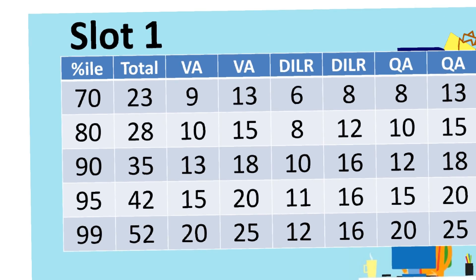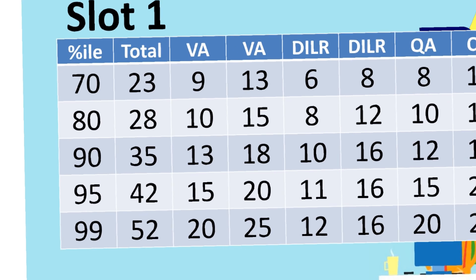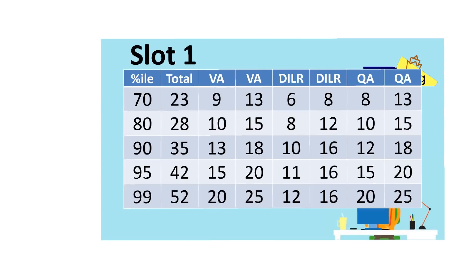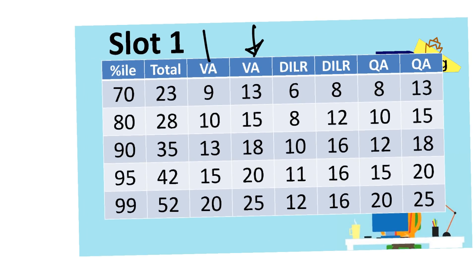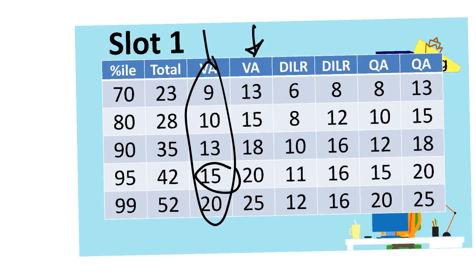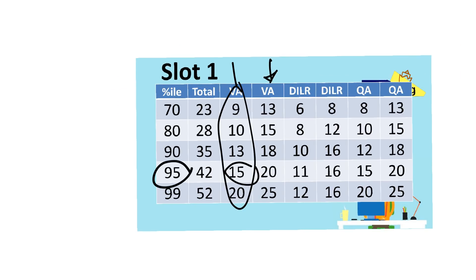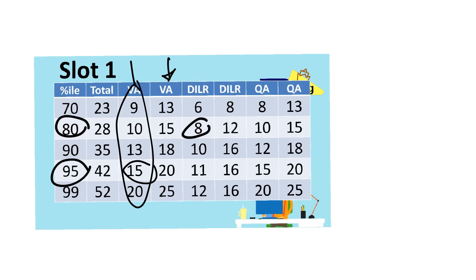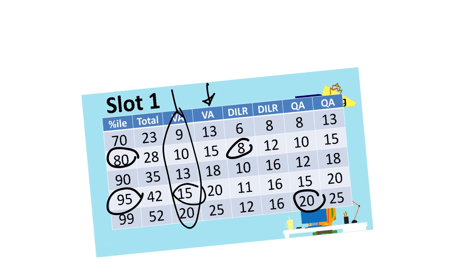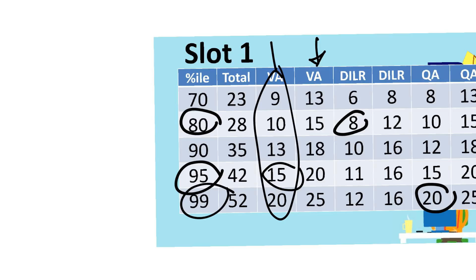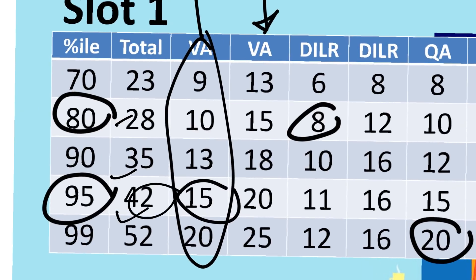Now let's look at the main two tables for Slot 1 and Slot 2. For Slot 1, depending on how much you attempted and got correct, here's how the percentile looks. For example in verbal — if I attempted around 20 questions and got 15 correct, I'm expecting around 95 percentile in verbal. In DI, if I got 8 questions right, that's around 80 percentile. In quant, if I got 20 right the section was simple enough to get 99 percentile. Please pause the video and find where you stand.